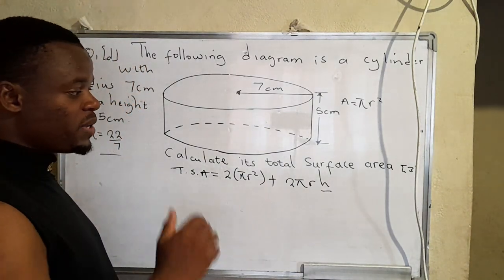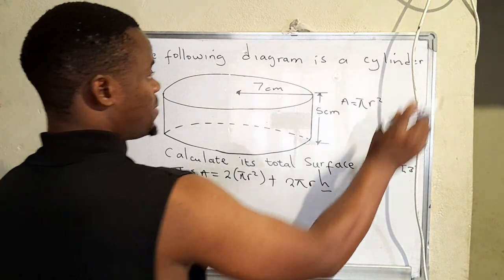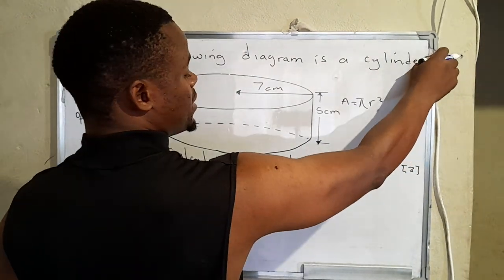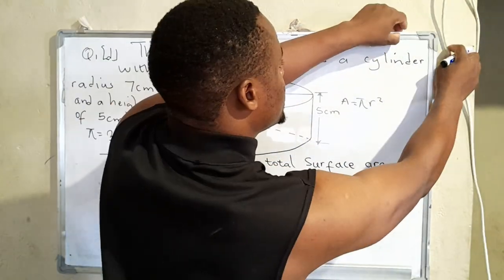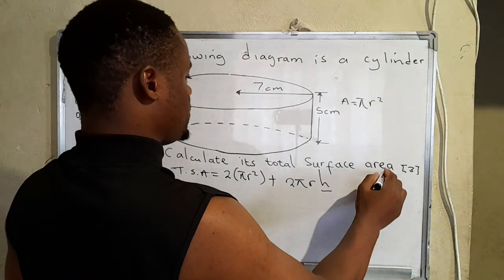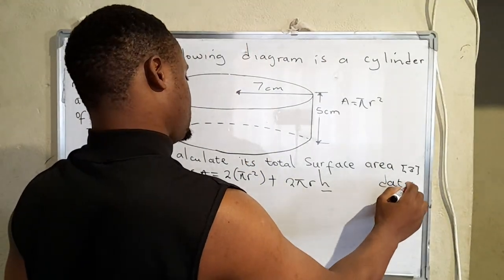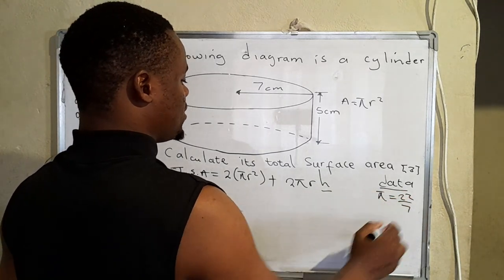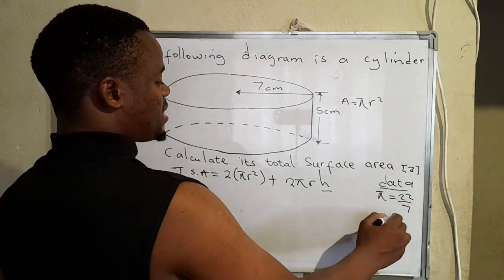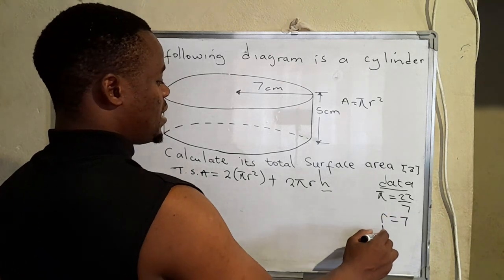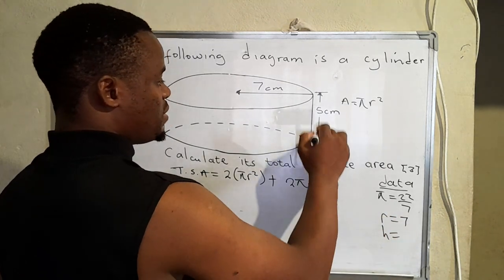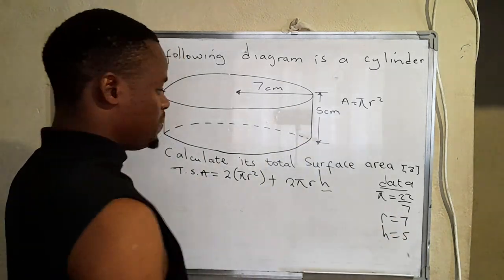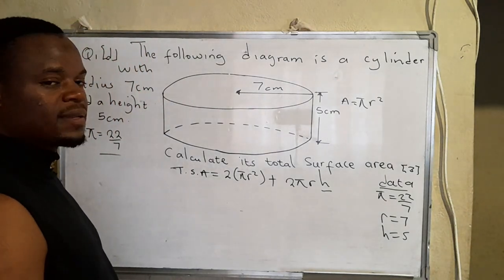Okay so with that formula in place, we can now collect data. Say what's pi. Pi has been given as 22 over 7. Then the radius has been given as 7, height of the cylinder has been given as 5. What else do we need? I think that's all.